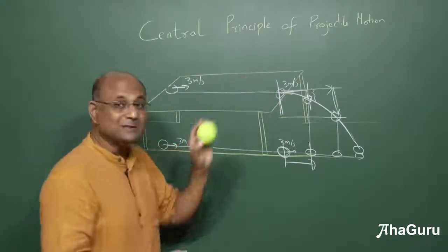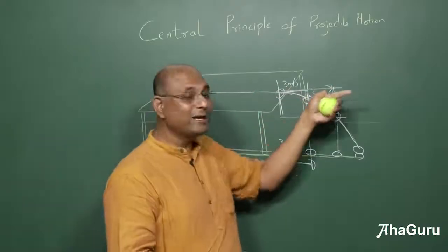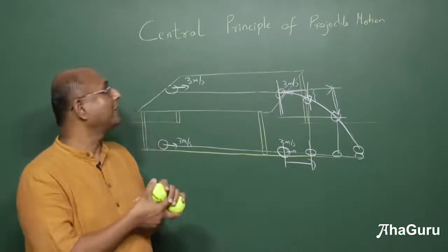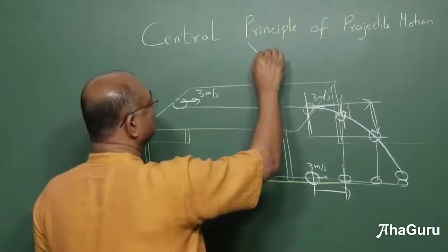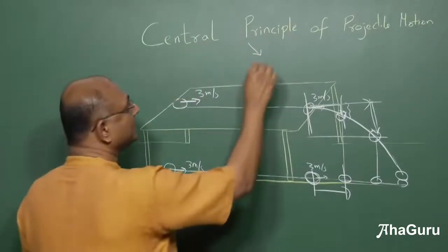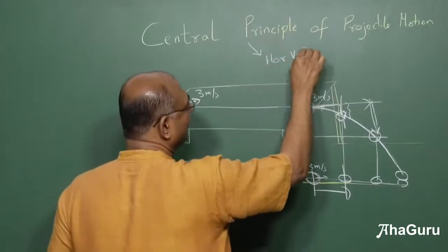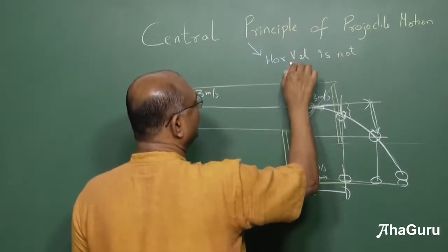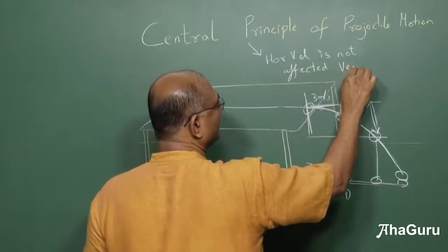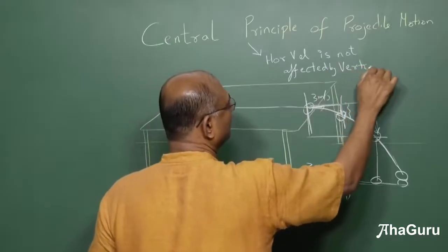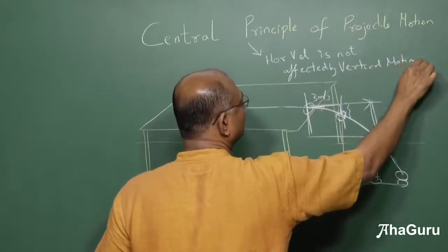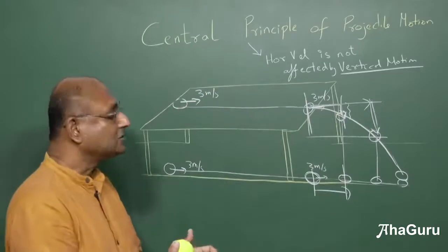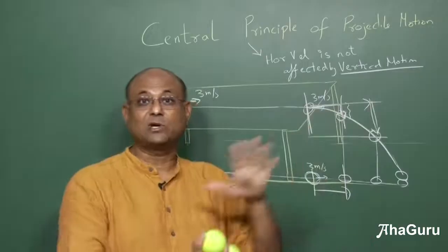This experiment demonstrates a very important principle: horizontal velocity remains constant. It is not affected by the vertical motion. Horizontal velocity does not get affected by the downward acceleration of gravity, so the horizontal velocity remains constant throughout the projectile's flight.